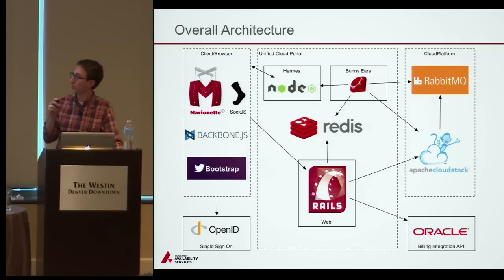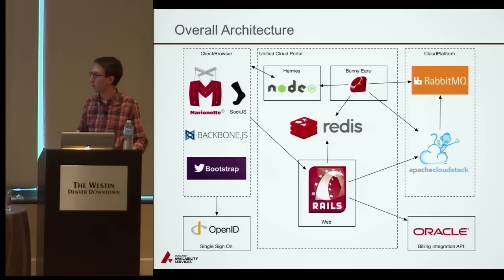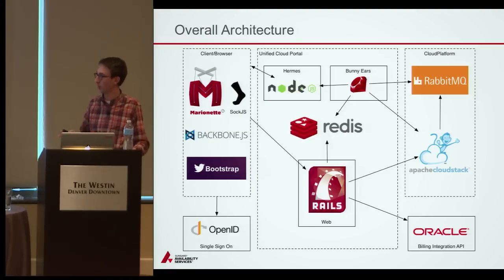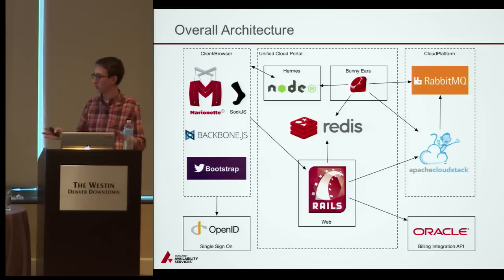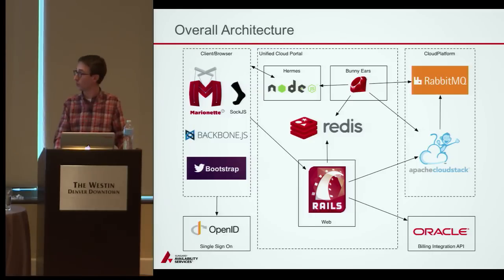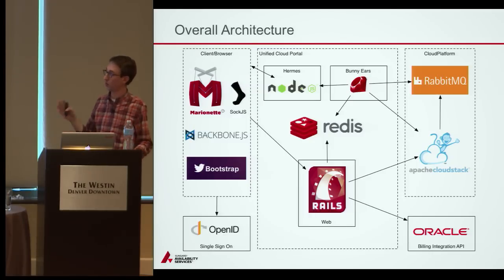The browser makes two connections back to our server. One is to a Ruby on Rails app, and the other is to a Node.js app we call Hermes. The Rails app handles all user interactions — forms, button clicks — and figures out which calls go to CloudStack versus a set of billing integration APIs built on top of Oracle systems for setting up customer accounts. We also use a Redis back-end data store to track async job IDs and request parameters for all CloudStack async jobs.